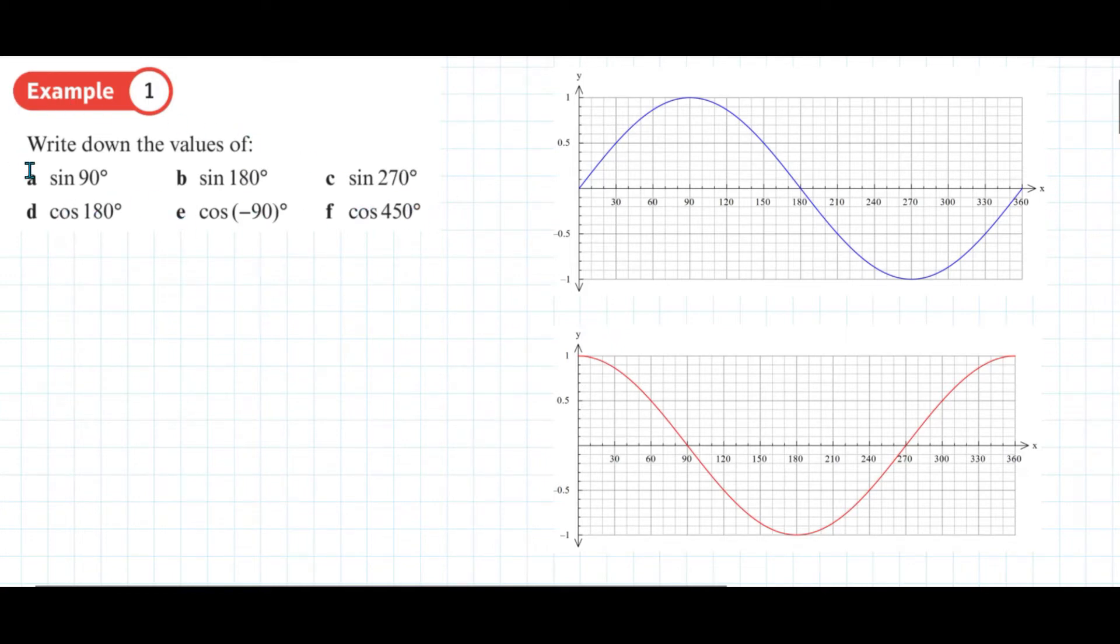We're going to do this from the graph. Sine of 90 degrees - we can find sine of 90 degrees on the horizontal axis, and there is the sine that goes along with 90 degrees. So the sine of 90 degrees is 1.